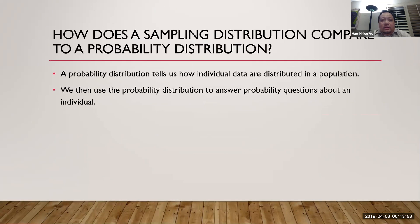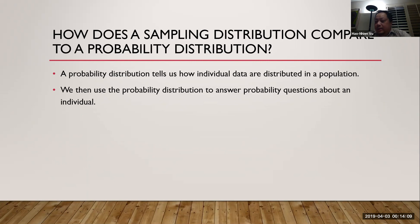What is a sampling distribution? It has the word distribution in it, so you may think it's related to the probability distribution — and you would be right. Let's think back to a probability distribution. A probability distribution tells us how individual data are distributed in a population.